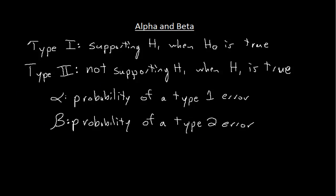So you should know what alpha and beta are, you should know what type 1 and type 2 errors are. Those are very important.